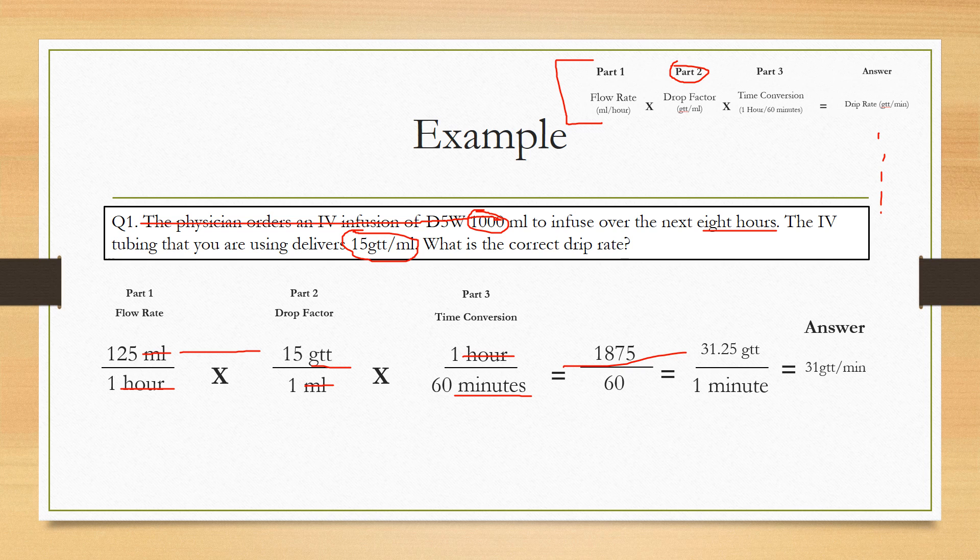And that's going to give you 31.25 drips per minute. All we did there was divide by 60 because all we wanted it was in 1 minute units. We wanted it per minute. You're not going to be standing there for 60 minutes counting 1,875 drips. You only want to stand there for 1 minute.